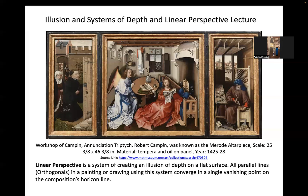This week we're covering the illusion and the systems of depth, also known as linear perspective. Linear perspective is a system of creating an illusion of depth on a flat surface. All parallel lines, also known as orthogonals, in a painting or drawing converge on a single vanishing point on the composition's horizon line. For this assignment you need three key factors: a vanishing point, a horizon line, and a set of orthogonal lines that meet within the drawing.